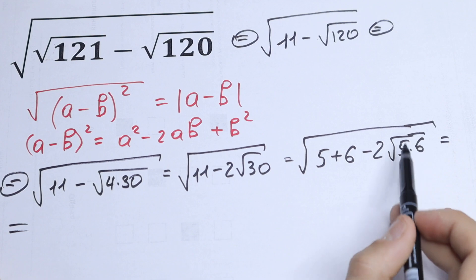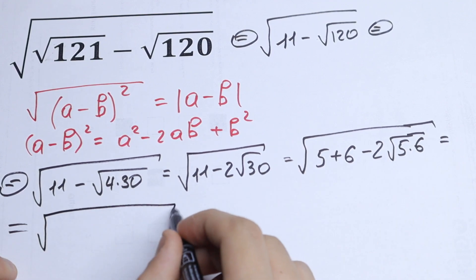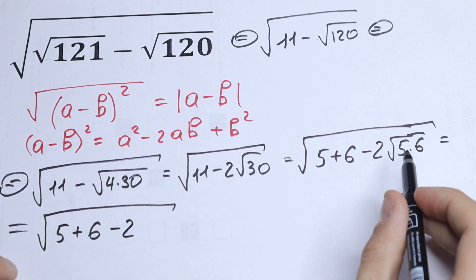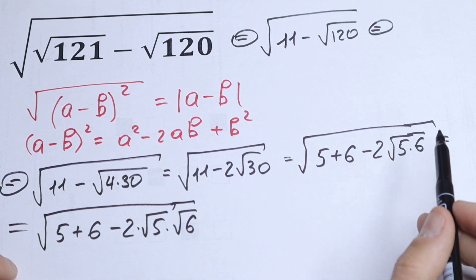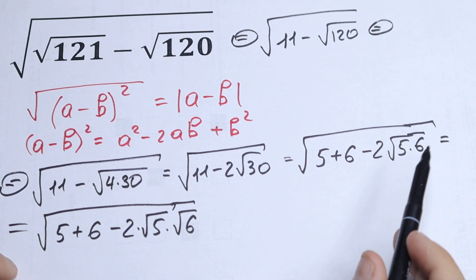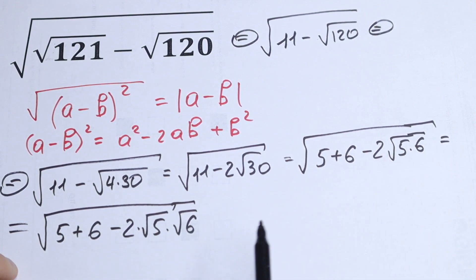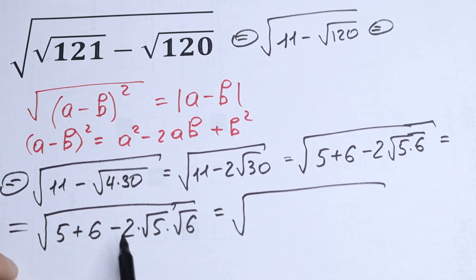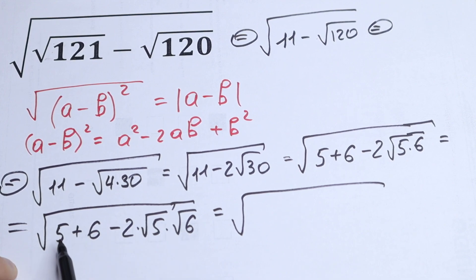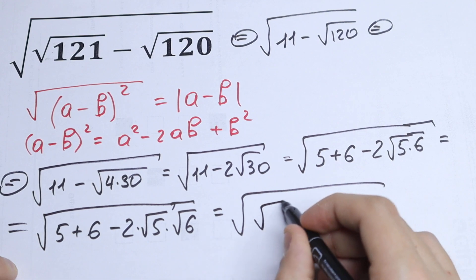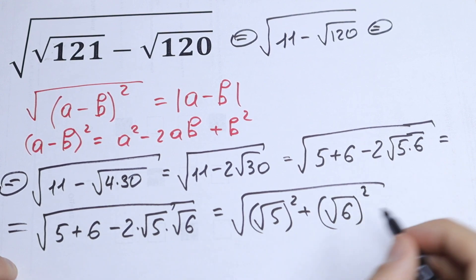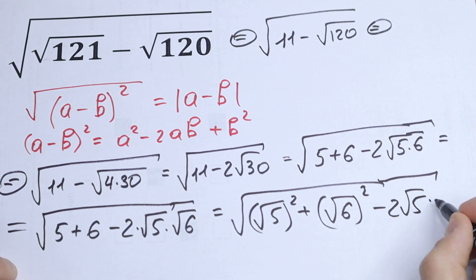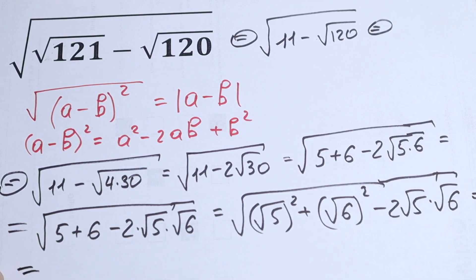So we have the square root of (5 plus 6) minus 2 times the square root of 5 times the square root of 6. We can split the square root of a product because of the same exponent rule. Now we have 2 times our a times our b. We can write 5 as (square root of 5) squared and 6 as (square root of 6) squared — the same as in our formula — and the last step: minus the square root of 5 times the square root of 6. And this is our formula.